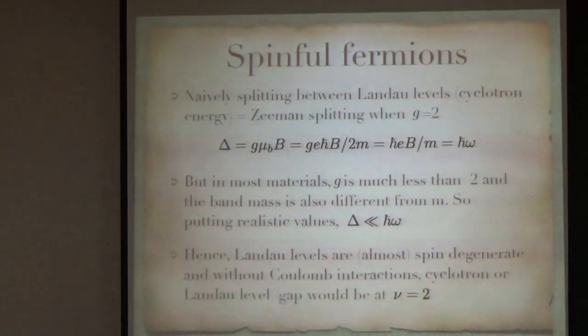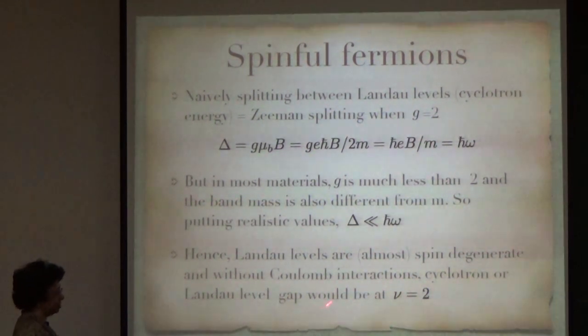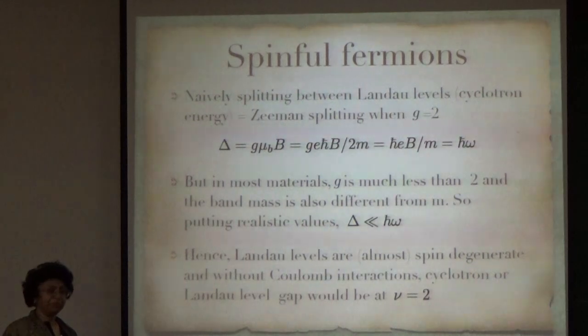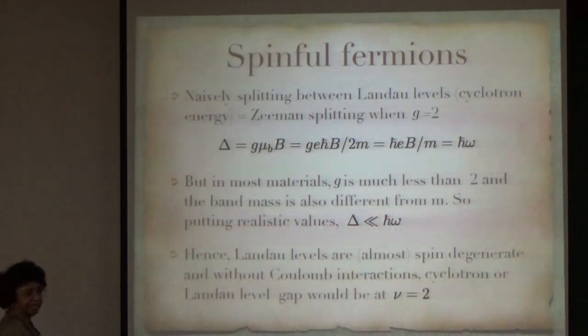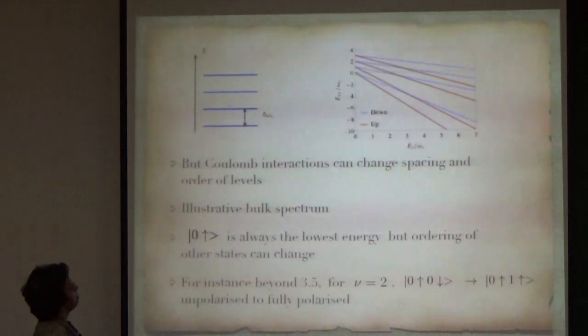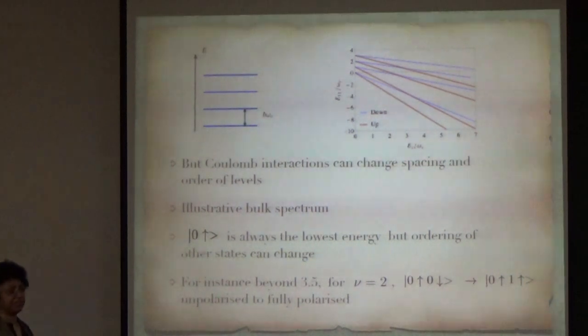Landau levels are actually almost spin degenerate, and if I didn't have Coulomb interactions, the Landau level gap would be at ν = 2, because you would first fill the lowest Landau level with both spin up and spin down states. You would not get any gap at ν = 1.